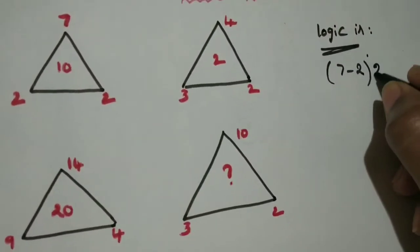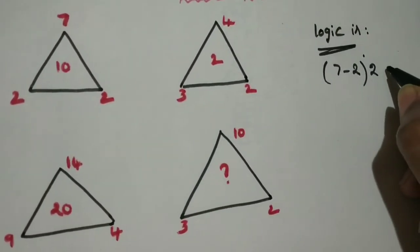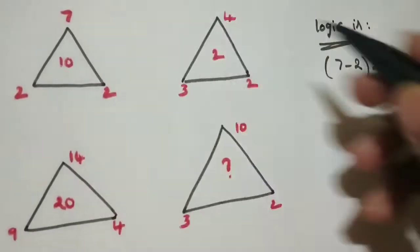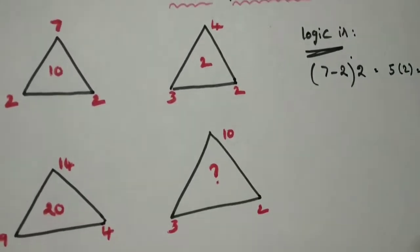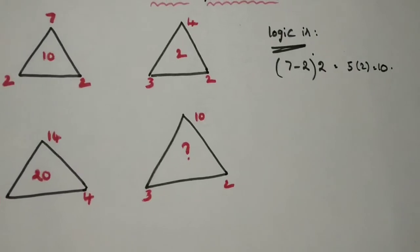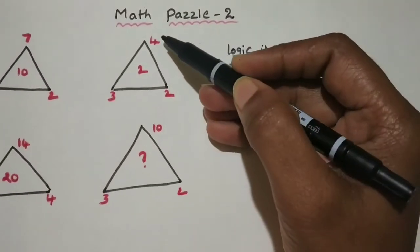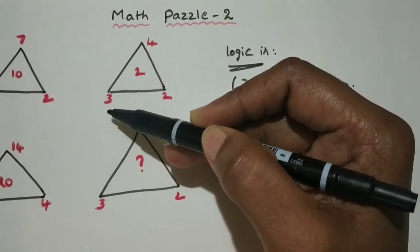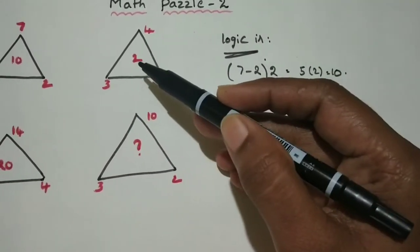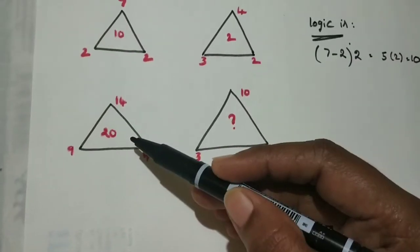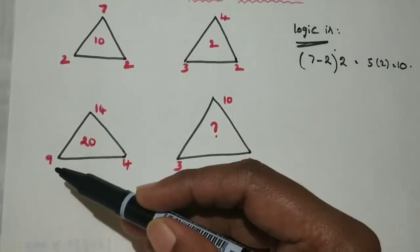7 minus 2 is 5, into 2 is 10. Like that, for this triangle also, 4 minus 3 is equal to 1. So 1 into 2, middle number 2 you are going to get. For this triangle also, 14 minus 9 is 5.